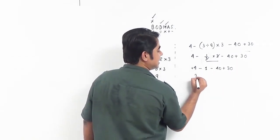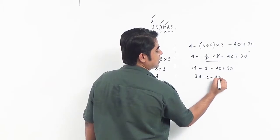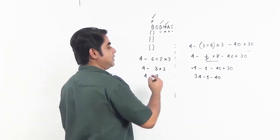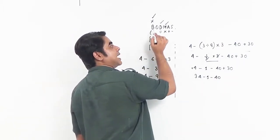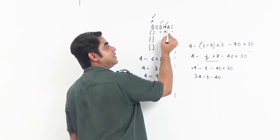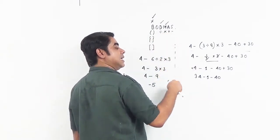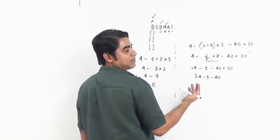This becomes 34 minus 1 minus 40. Next we scan it again. We don't have brackets, division, multiplication, or addition. We have subtractions. I can do any of these subtractions first, 34 minus 40 or 34 minus 1.